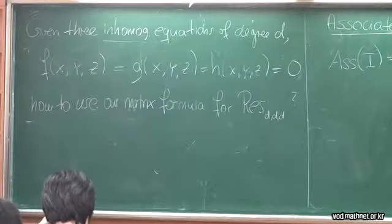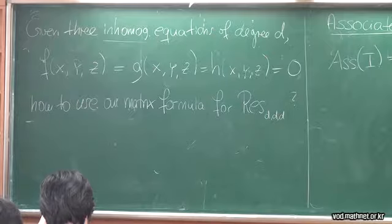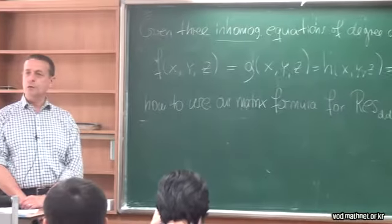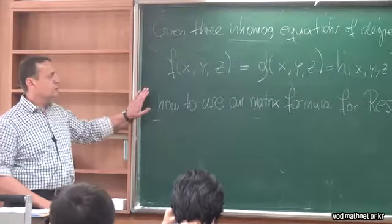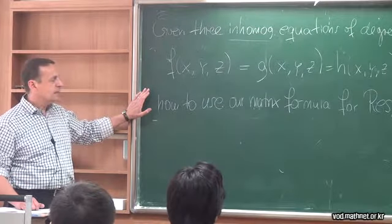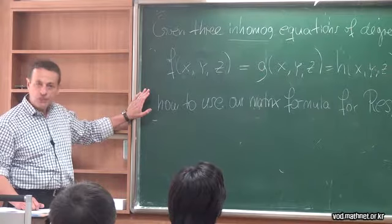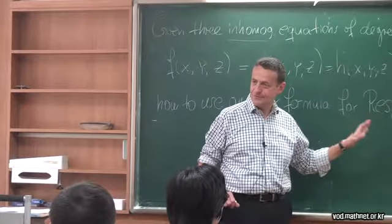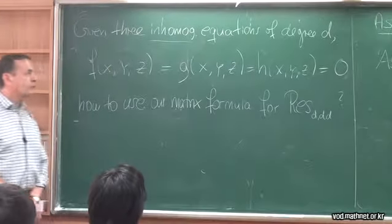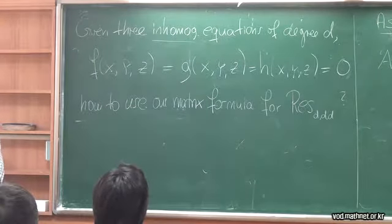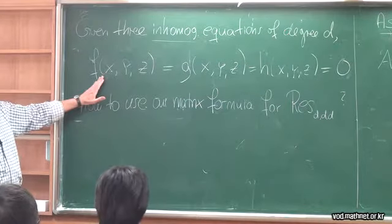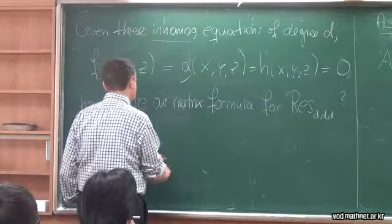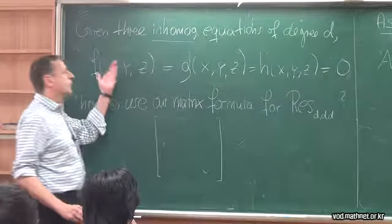On primary decomposition. Before we get there, I'd like to say a few words about this question, because when I presented this in Berkeley there was a lot of confusion among the students about what to do. We have a matrix formula for the dense resultant of three homogeneous ternary forms of degree D. Homogeneous ternary forms. Now suppose you're given three equations that are inhomogeneous — three inhomogeneous equations of degree D in three variables x, y, and z. How can we use this matrix formula to solve this or get some information?